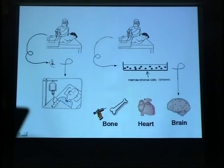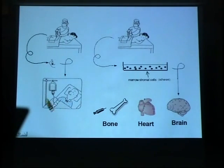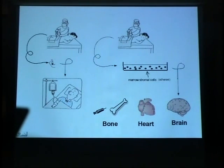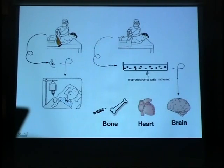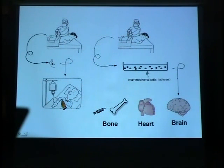The most successful cell therapy at present is obviously bone marrow transplantation, shown on the left-hand side. One liter of marrow cells are aspirated from the iliac bone of the patient, and the aspirated marrow cells are injected intravenously.